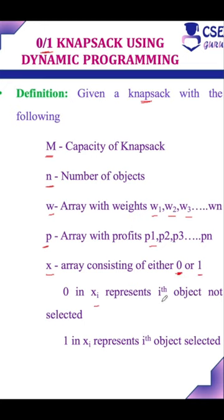0 in Xi represents the ith object is not selected to place it into the knapsack, and 1 in Xi represents ith object is selected to place it into the knapsack.